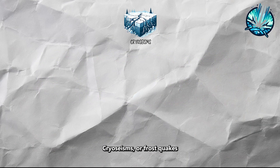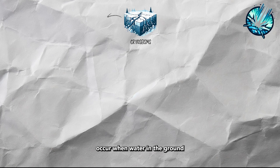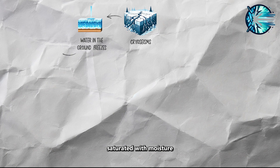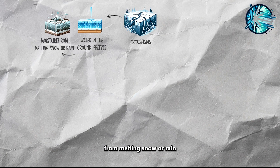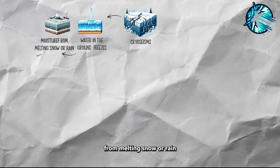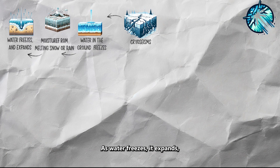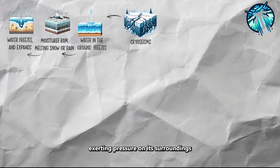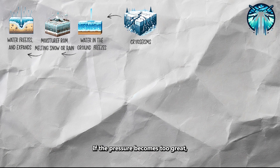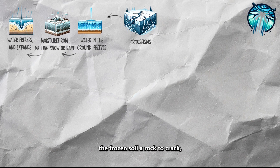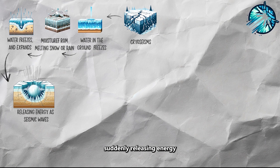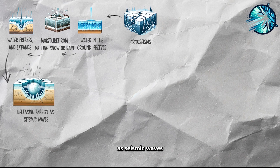Cryoseisms, or frost quakes, occur when water in the ground rapidly freezes during a sharp temperature drop, typically in areas saturated with moisture from melting snow or rain. As water freezes, it expands, exerting pressure on its surroundings. If the pressure becomes too great, it causes the frozen soil or rock to crack suddenly, releasing energy as seismic waves.